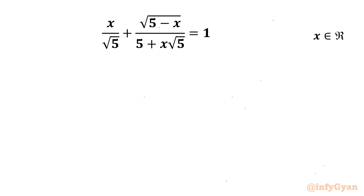Welcome to Infigar my dear friends. In this video we are going to take up another challenging question from radical equations. The given equation is x over root 5 plus root 5 minus x over 5 plus x root 5, equal to 1, and we have to find out only real solutions.